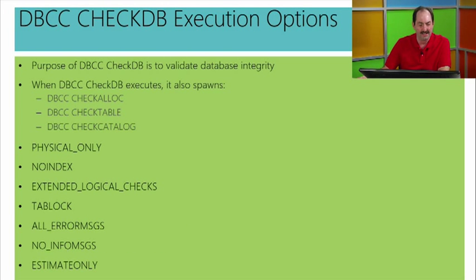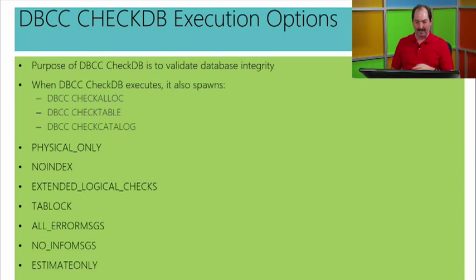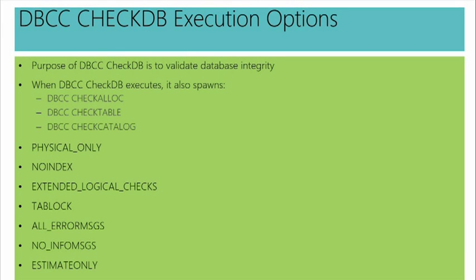The one we're going to look at now is DBCC CheckDB. Its purpose is to validate integrity of the database structure and the data inside it. It actually spawns other processes - other DBCC statements like check allocations, check table, and DBCC check catalog. If I have a large database whose integrity I'm attempting to check, there are some options I might want to consider, because it might take seriously hours and hours to run. Some options: physical only, no index, all error messages - if I just want to see error messages without all the detailed reporting - and estimate only, which just gives me an estimate of what it would take.